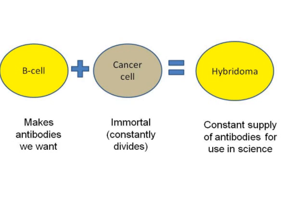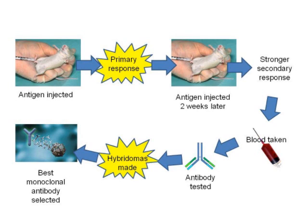That hybridoma would then be kept frozen or in a fridge and grown up periodically to produce antibodies for use in science. Here's a summary of monoclonal antibody production: a mouse has an antigen injected into its peritoneal cavity, producing a primary response. Two weeks later the same antigen is injected again for a stronger secondary response. Blood is then taken and tested for antibodies against the antigen. If the response is good, hybridomas are made and the best monoclonal antibody is selected for therapeutic use.